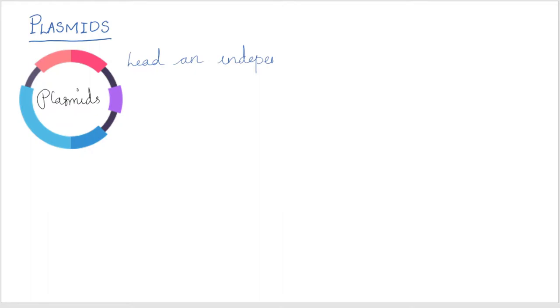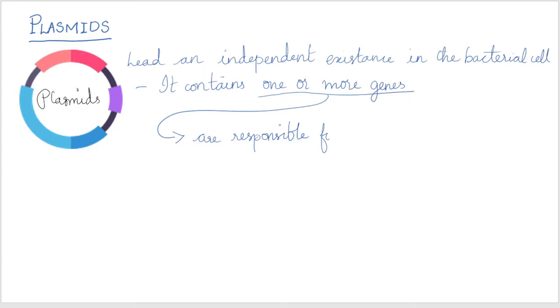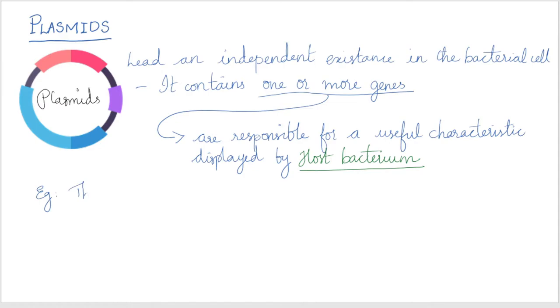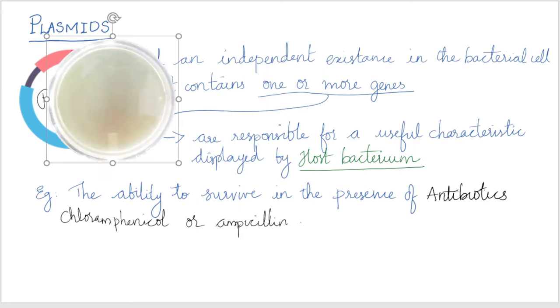Plasmids are circular molecules of DNA that lead an independent existence in the bacterial cell. Plasmids almost always carry one or more genes, and often these genes are responsible for a useful characteristic displayed by the host bacterium. For example, the ability to survive in normally toxic concentrations of antibiotics such as chloramphenicol or ampicillin is often due to the presence of a plasmid carrying antibiotic resistance genes.